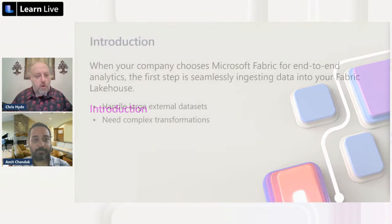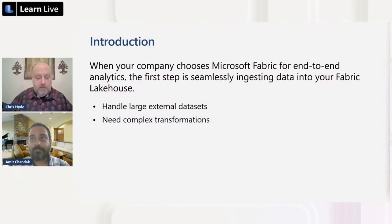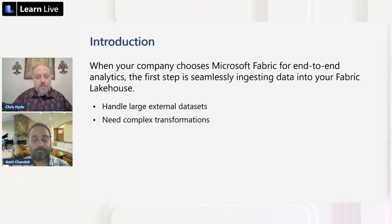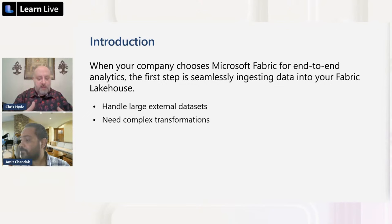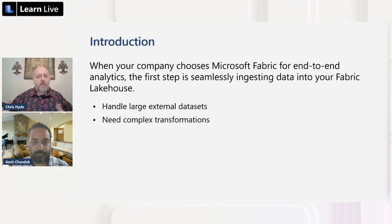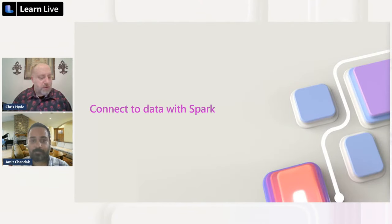We've decided to work with a new lakehouse in our Fabric tenant. The first thing we need to do is get some data into it - also known as ingestion. We'll use Spark notebooks to do this. They're great at handling large datasets very efficiently and are a perfect way to get data into the bronze layer, which is the staging layer of our lakehouse. We can then use powerful transformation features to prepare our data to move into the silver layer and later the gold layer.